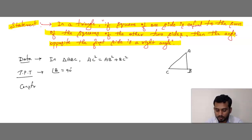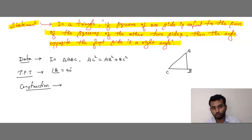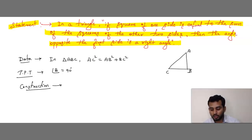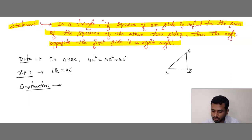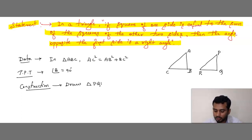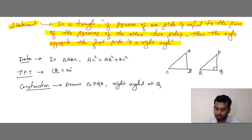Now, to prove that angle B is 90°, we do a small construction. Please follow these steps carefully. When the construction part comes, then only you do the construction — if not, you should not. We need to draw one right-angled triangle. Draw triangle PQR in which the right angle is at Q.